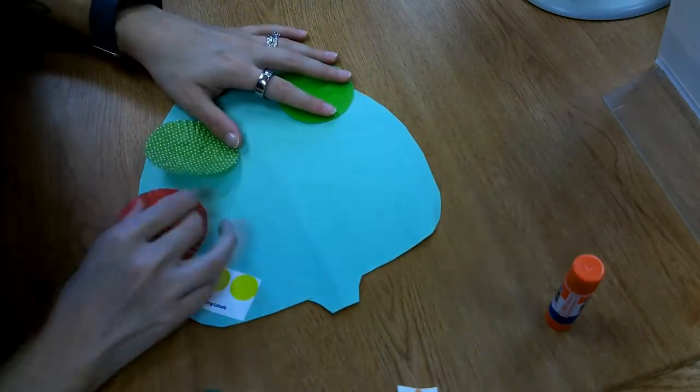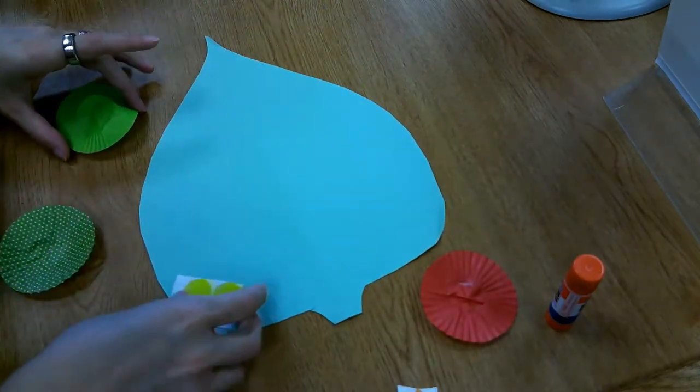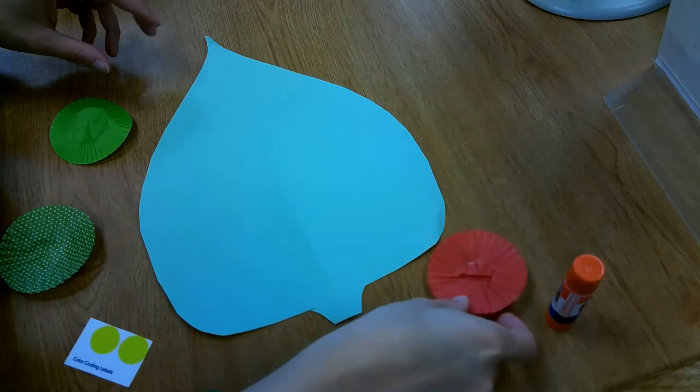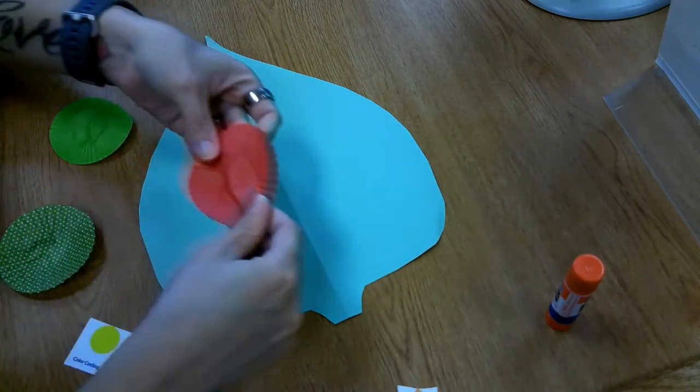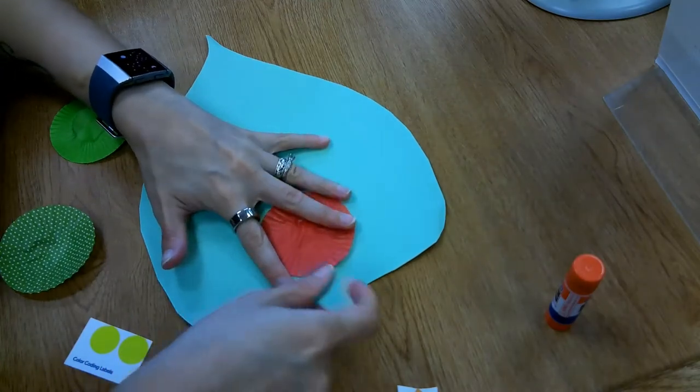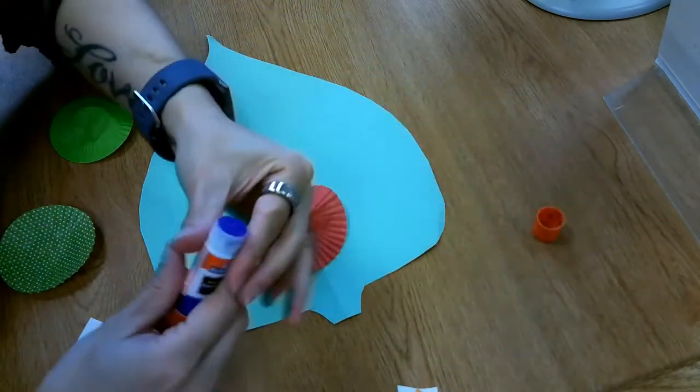We're going to go ahead and start by situating our caterpillar on the leaf. So I think I want my caterpillar, I want his head to face here towards the base of the leaf. And the head is the red part.